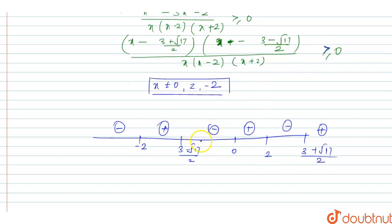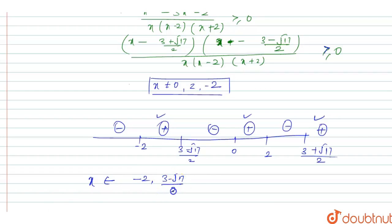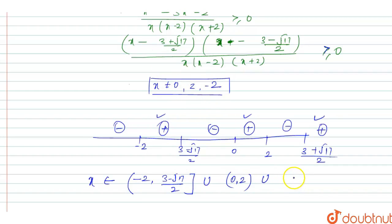The sign analysis gives positive, negative, positive, negative, positive, negative. Since we need the expression ≥ 0, we take the positive intervals. The solution set is x ∈ (-2, (3-√17)/2] ∪ (0, 2) ∪ [(3+√17)/2, ∞).